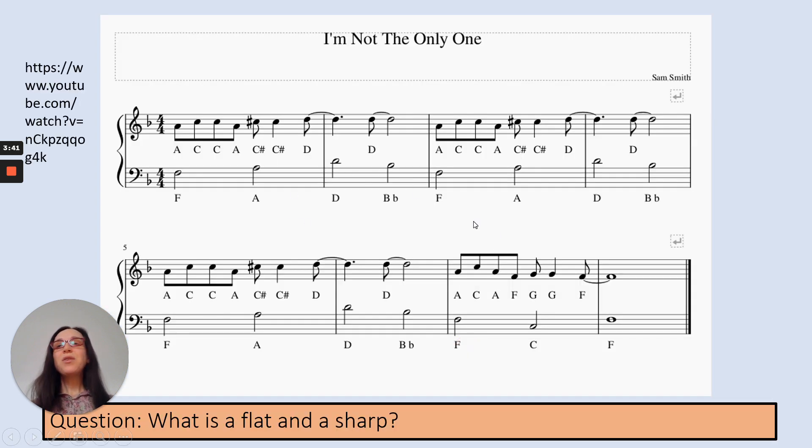Okay, so let's have a go at playing a piece with some black notes in. I'm Not the Only One by Sam Smith has got a C sharp and a B flat in. So let me explain how this notation here works. These two lines go at the same time. So we're just going to focus now on looking at this top line here, and then we're going to jump down to this top line here and do this one.